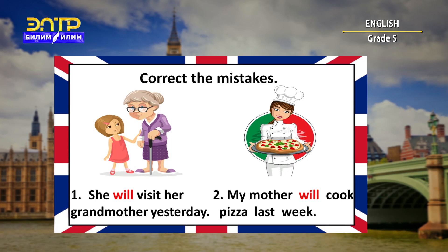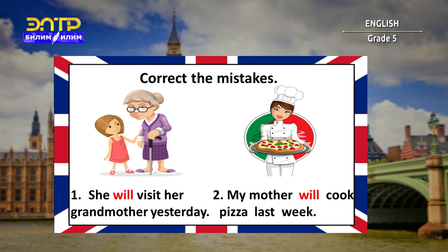Children, have a look at these sentences. There is something wrong with them. Read and correct the mistakes. Let's read the first sentence: 'She will visit her grandmother yesterday.' The mistake is the word yesterday, because it tells us about past simple and we are talking about future. So we should change it to tomorrow.